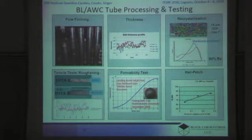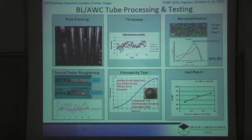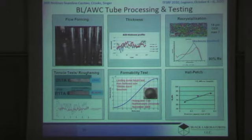The grain size here was about 14 microns with a very weak texture. Compared to the larger grain size DAISY material, the surface roughness after tensile testing is shown here on the red line — it's much less, an order of magnitude less than the surface roughening caused by plastic deformation we saw in the DAISY material, because the grain size is about an order of magnitude less.